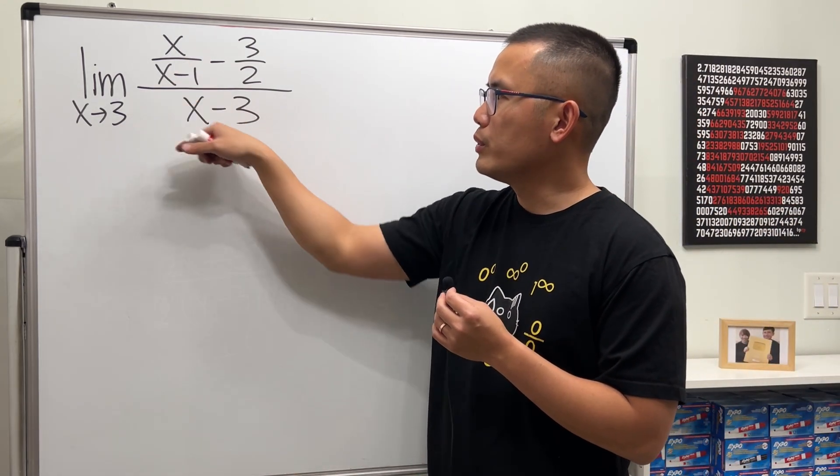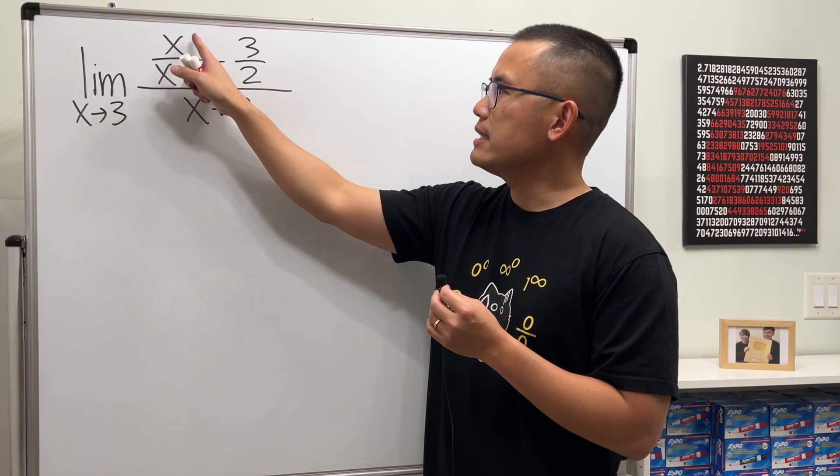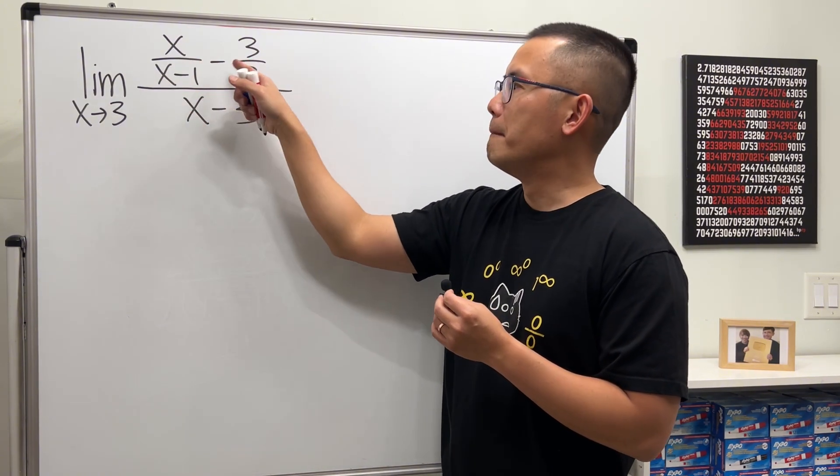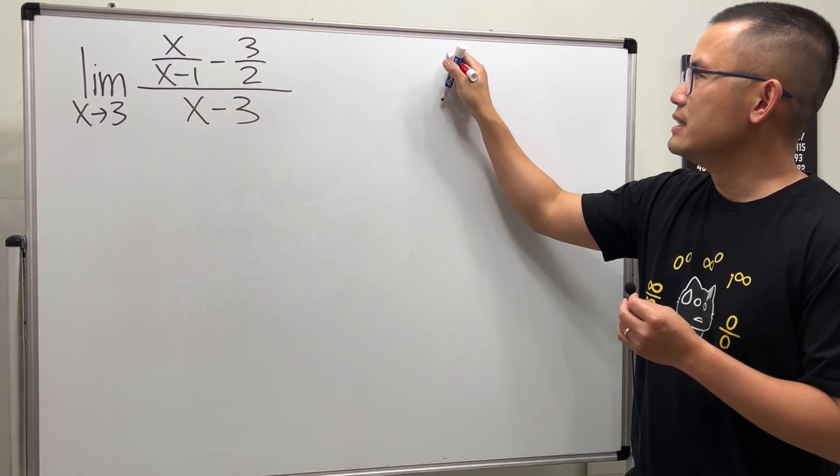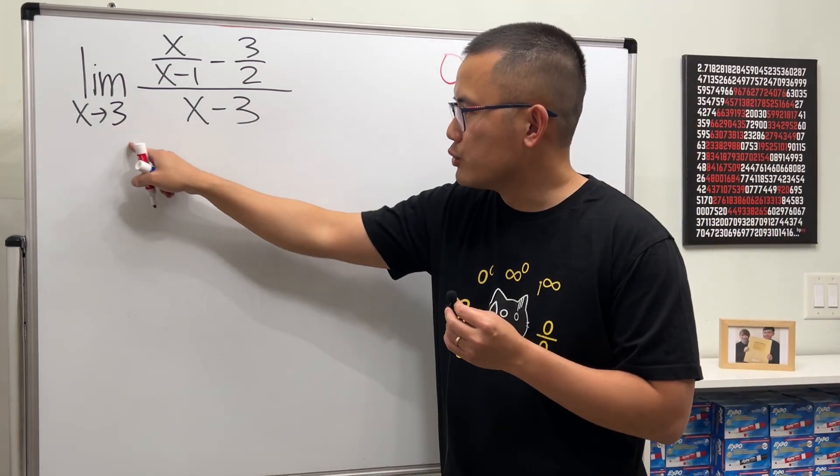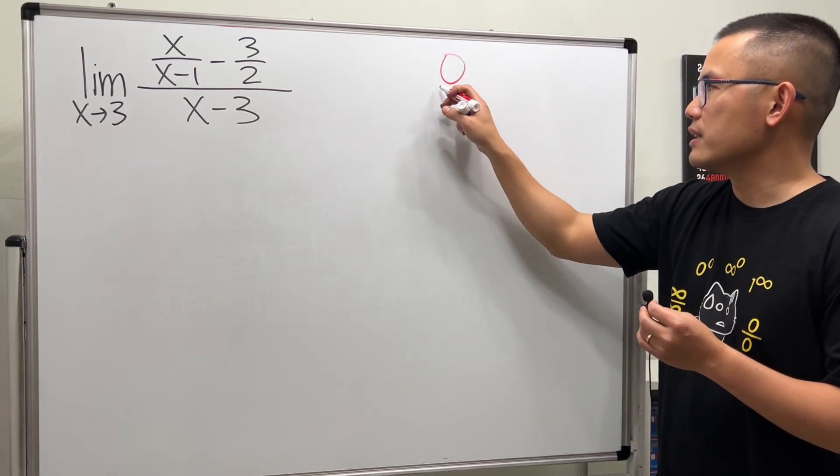When we do that, here we get 3 over 2 minus 3 over 2, so we get 0. And when we put 3 in here, 3 minus 3, we also get 0.